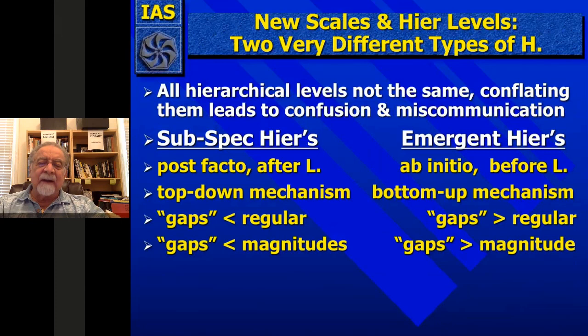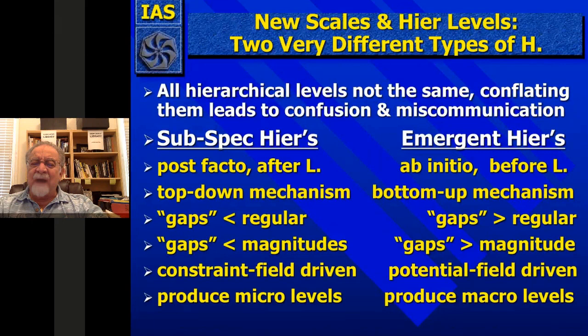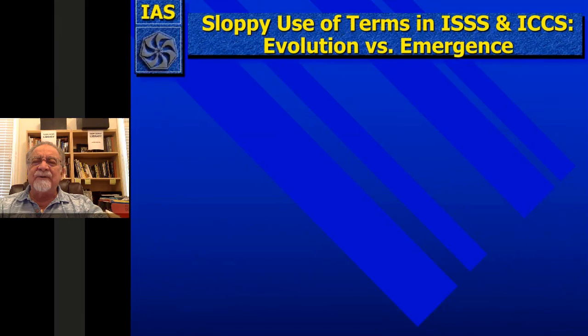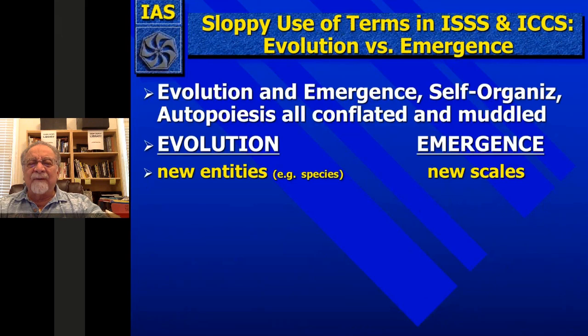We can show this in the data. If you examine the data in a different way, you can see that subspecialization hierarchies are constraint-field driven while emergent hierarchies are potential-field driven. Humans have a very poor recognition of potential fields entirely. Subspecialization produces micro-levels within a scale, while emergent hierarchies produce macro-levels or new scales. That was a very useful discrimination between two types of hierarchies not mentioned anywhere else in the hierarchy literature, as far as I know.